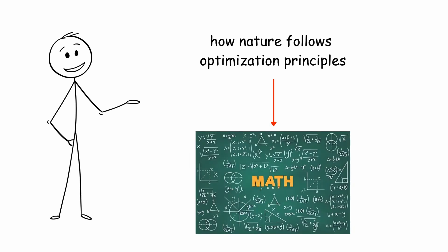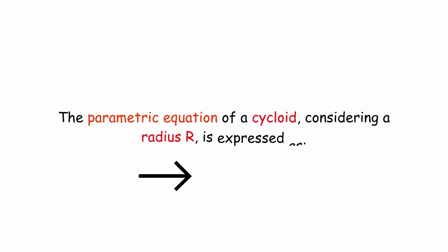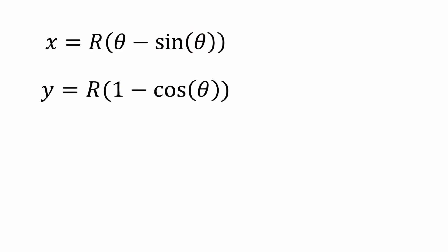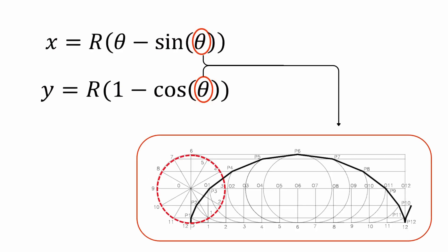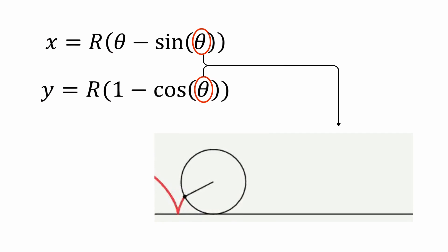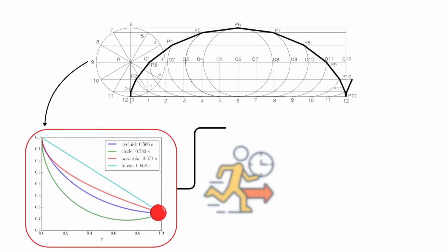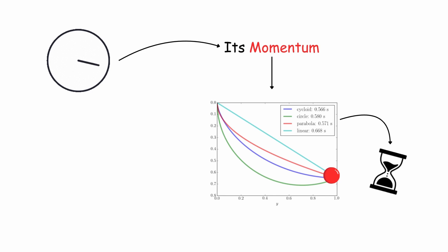The parametric equation of a cycloid, considering a radius r, is expressed as: x = r(θ - sin θ), y = r(1 - cos θ), where θ is the parameter representing the angle of rotation of the circle generating the cycloid. This curve ensures that the particle always descends in such a way that it quickly reaches the highest possible speed and, at the same time, uses its momentum to reach the endpoint in the shortest time.